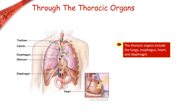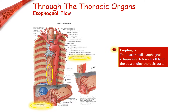Moving on to the thoracic organs — as mentioned at the beginning, we will be focused on the lungs, esophagus, and diaphragm, though it is always good to remember the heart is considered a thoracic organ as it is in the thoracic cavity. Blood flow through the esophagus is supplied through the esophageal arteries, which branch from the anterior side of the descending aorta. The musculophrenic and pericardiophrenic arteries branch from the internal thoracic artery, and the inferior phrenic arteries emerge from the descending abdominal aorta.